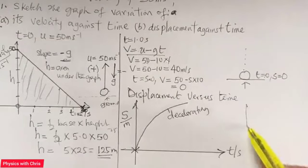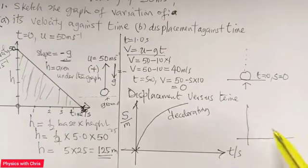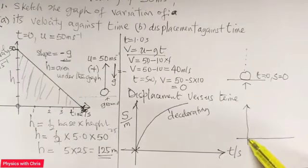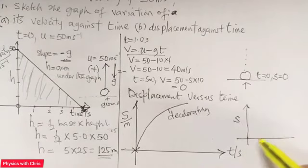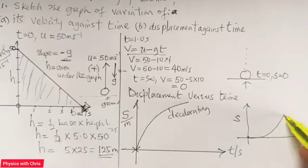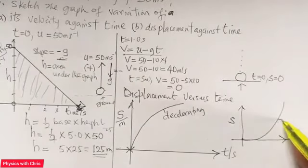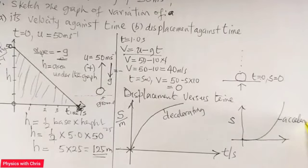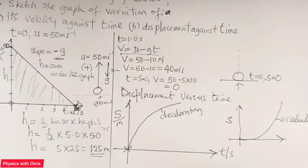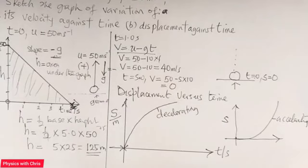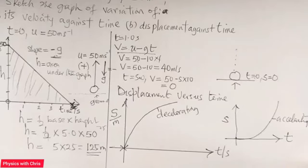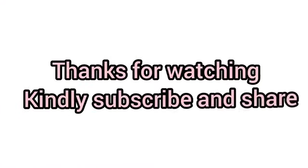Comparing with the first video, when the body is dropped from rest it falls with increasing velocity because it's accelerating. The distance-time graph in that case curves in the opposite direction. This shows that acceleration can be interpreted from the shape of the distance-time graph: a curve showing increasing distance with time indicates the body is accelerating and its speed is increasing.